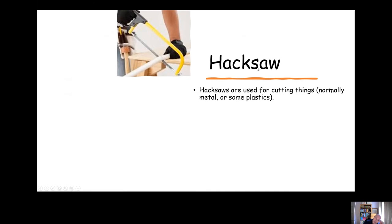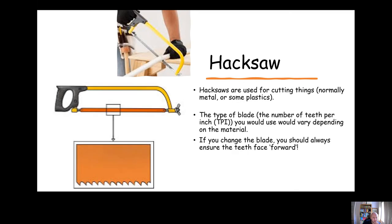Hacksaws also have replaceable blades and we generally use them for cutting, for example, metal pipe and some plastic pipes, not all plastic pipes. The type of blade, basically the number of teeth per inch, would vary depending on the material. But whichever blade we put in we should always make sure that it's fitted under tension. We keep the blade under tension and the teeth should be facing forward, should be facing away from you as you make that cut.